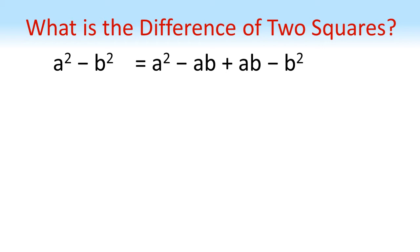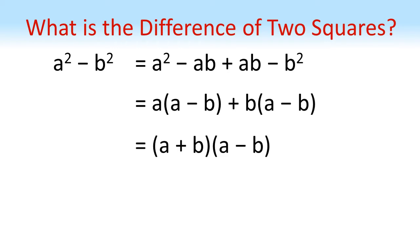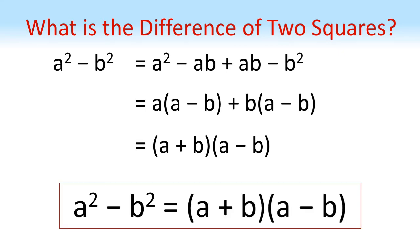Then if we factorize the a from the first half and the b from the second half, we get this, which is the same as a plus b times a minus b. So the difference of two squares, a squared minus b squared, is always equal to a plus b multiplied by a minus b.